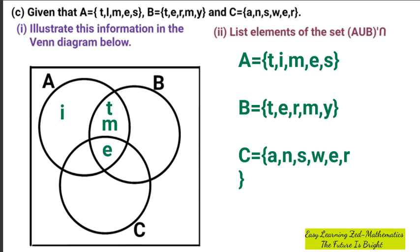Now we go to S. Is S found in set B? No. Is S found in set C? Yes. So S is going to be on the intersection of set A and C, which is here.